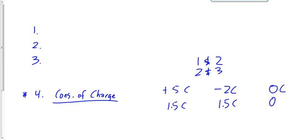The third one is still going to be 0 coulombs because nothing has happened to it. The goal when two charges touch each other is always to balance out — we assume they always do. If one object is much bigger than another, it can hold more charge, so we assume equal size and equal shape so they balance out. Plus 5 minus 2 gives a total of plus 3, divided amongst the two charges that touched: 1.5 and 1.5. Now 2 touches 3.